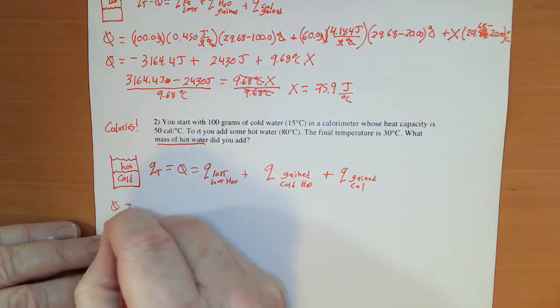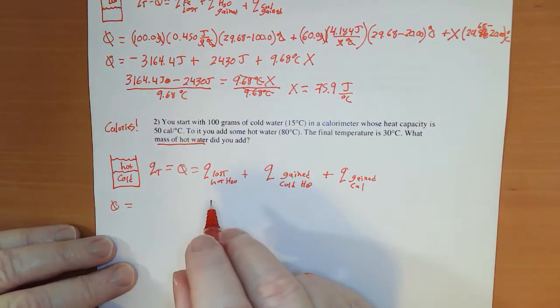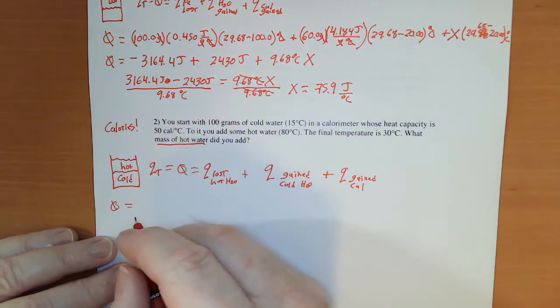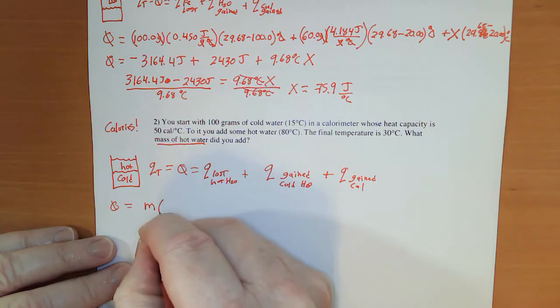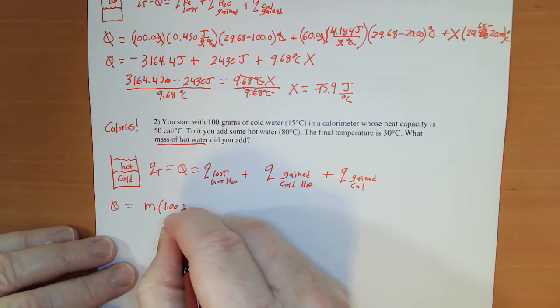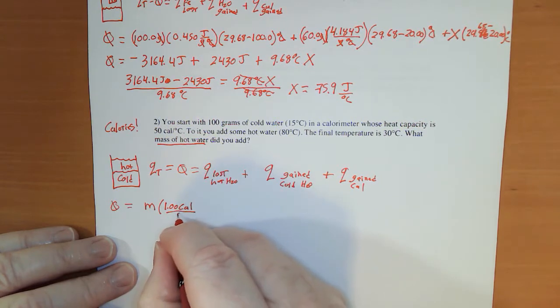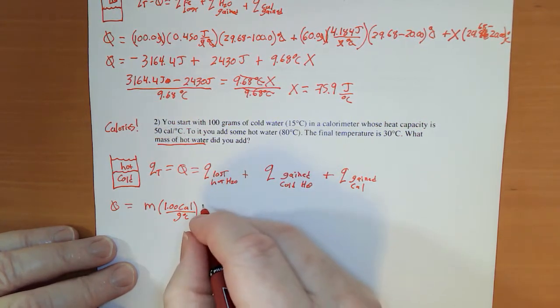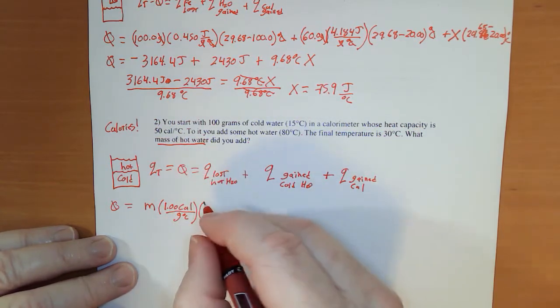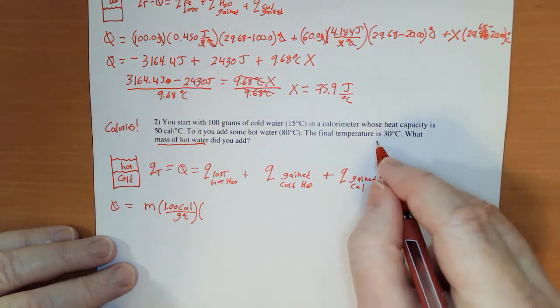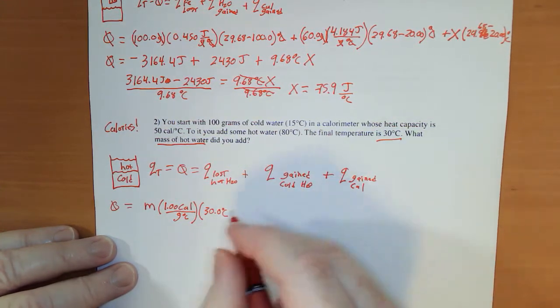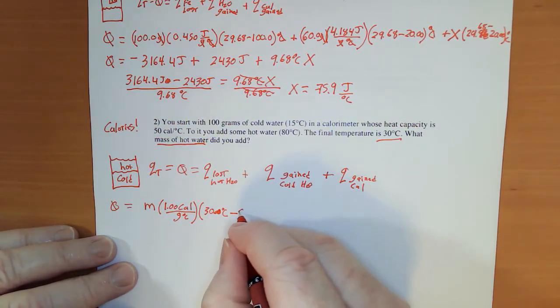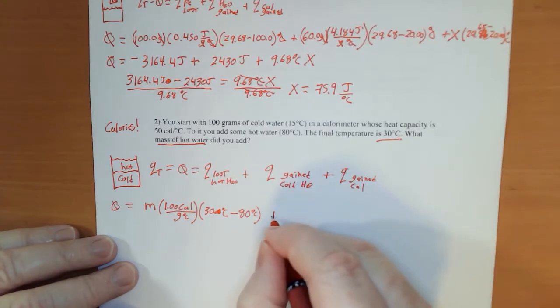Zero equals what was lost. How much hot water do I have? I don't know, so I'm going to call that M, times the heat capacity of 1.00 calorie per gram degree Celsius, times the temperature change. It ended at 30 degrees. Everybody ends at the same temperature. The way I've written it is just 30, so it's going to be a one-sig-fig answer. Minus, it started at 80 degrees.